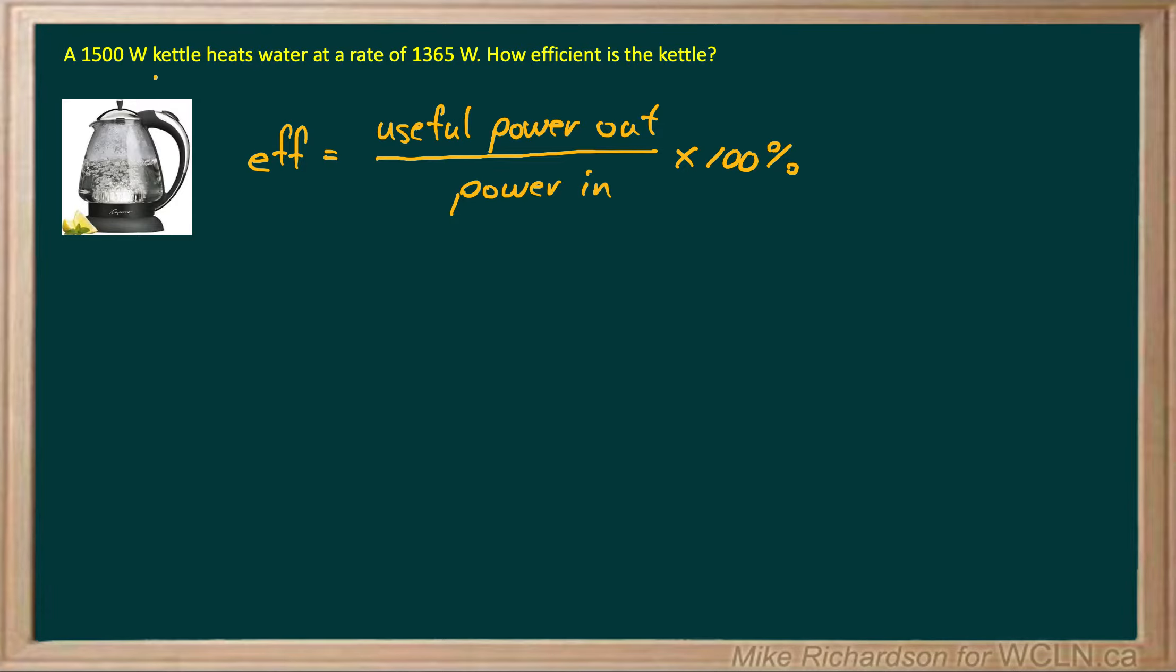A 1500 watt kettle, that's what it draws from the wall, heats water at a rate of 1365 watts. What is the efficiency of the kettle?